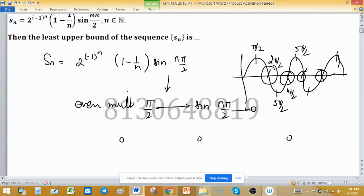Now find the first term by putting n equals 1. This is 2 raised to the power -1, and inside the bracket (1 minus 1/n) where n is 1, and sin(π/2). Sin(π/2) is 1, so this is the first term.